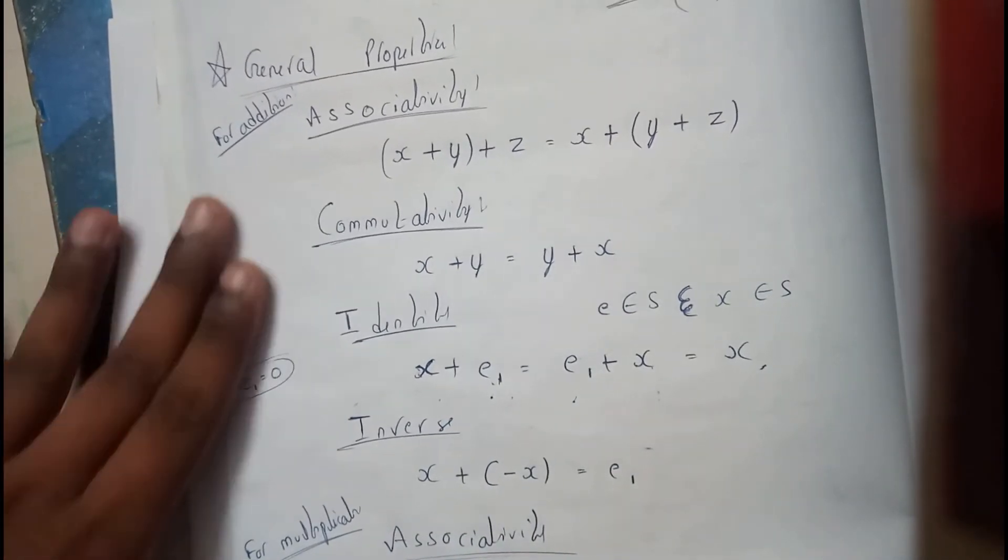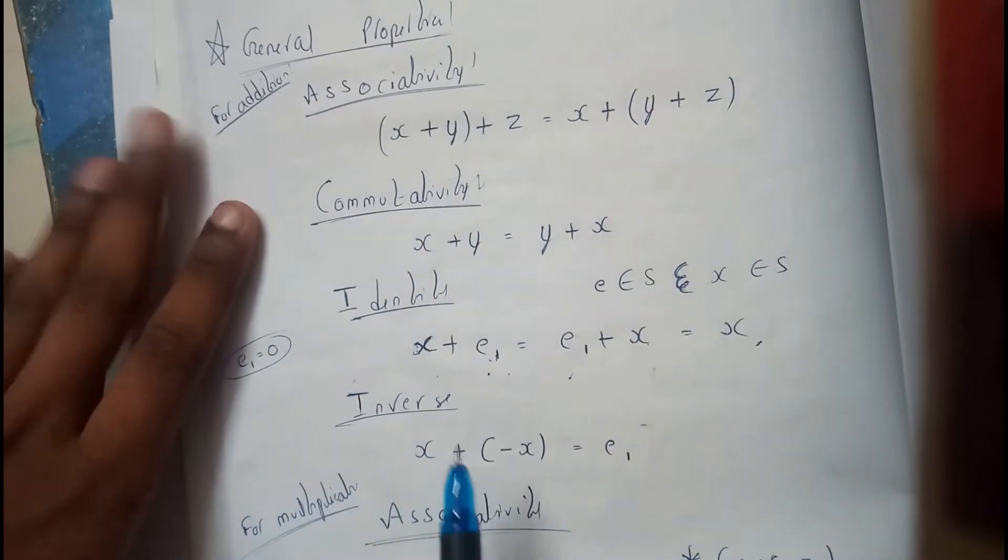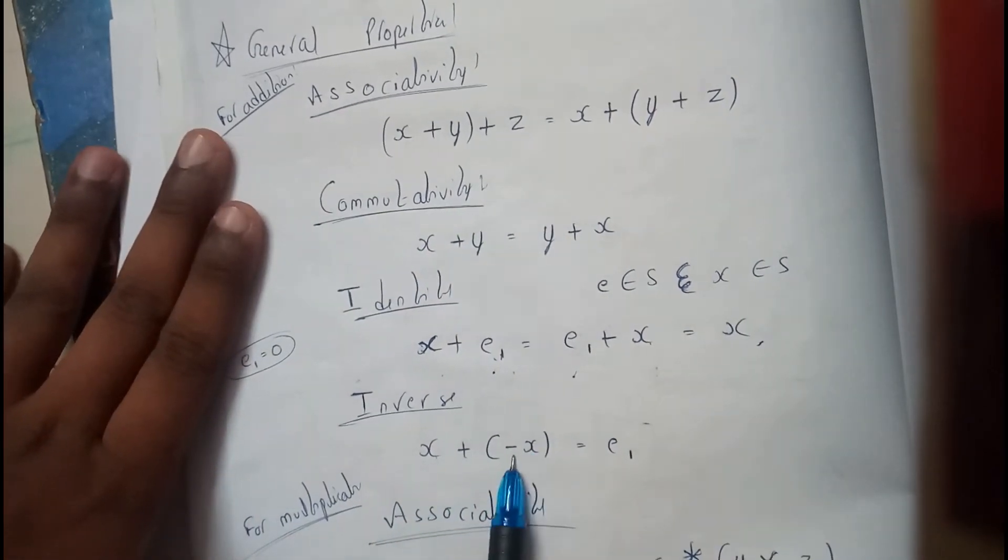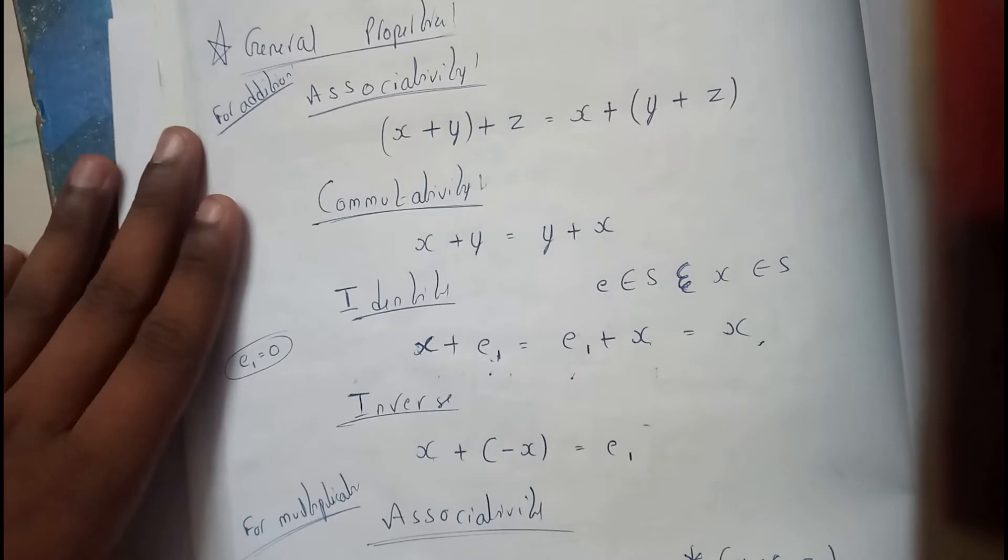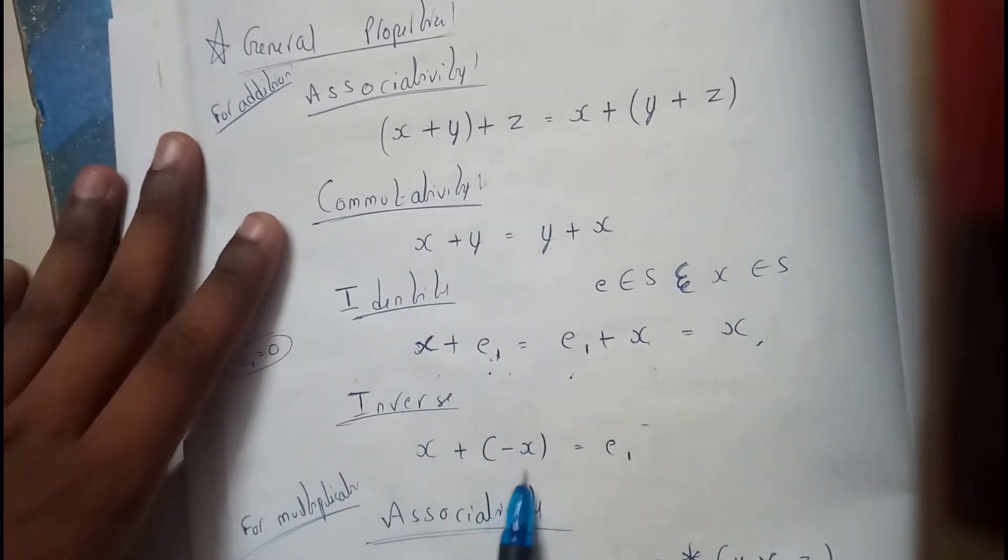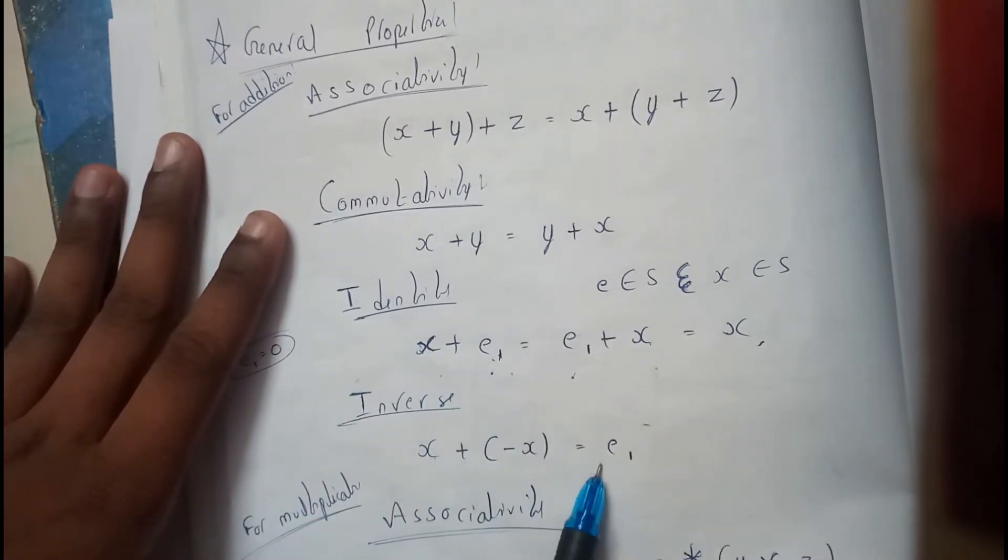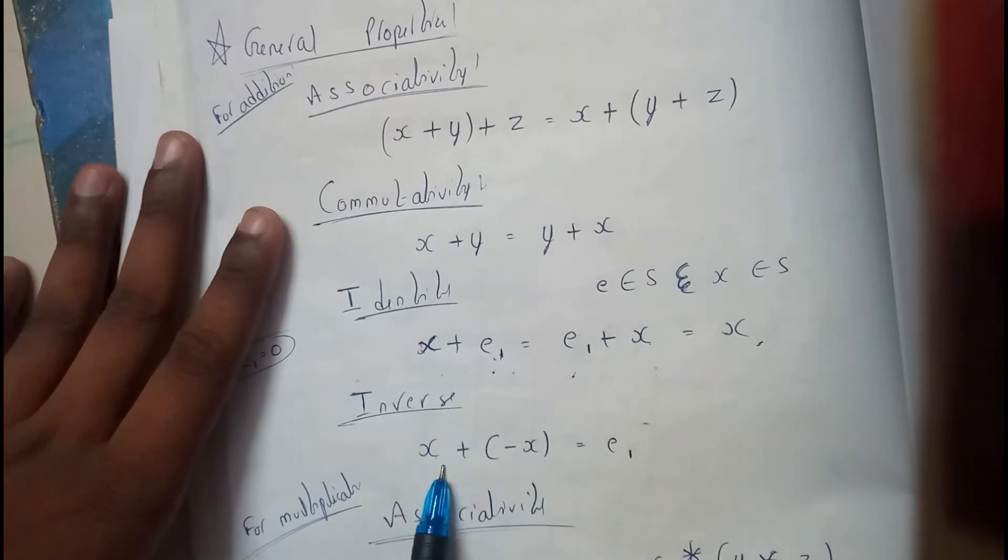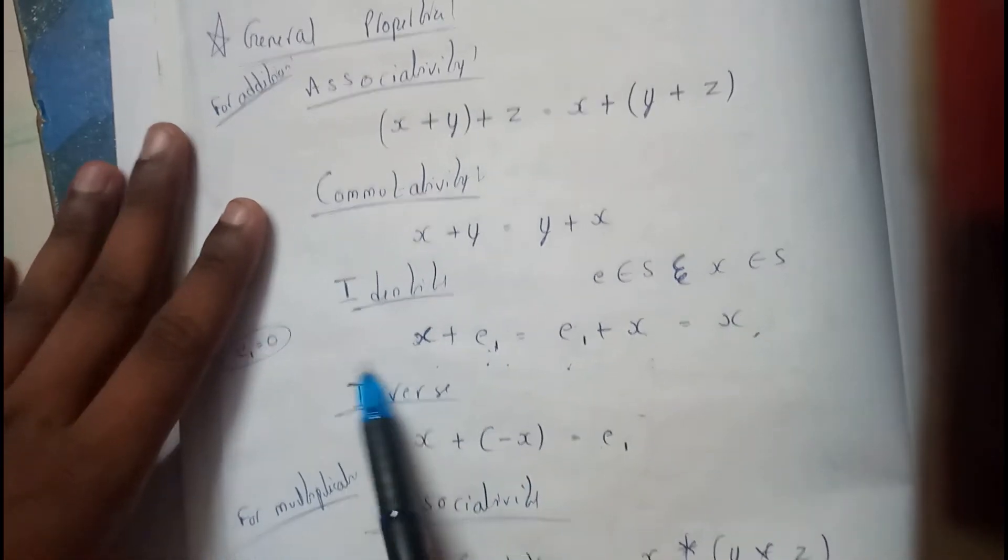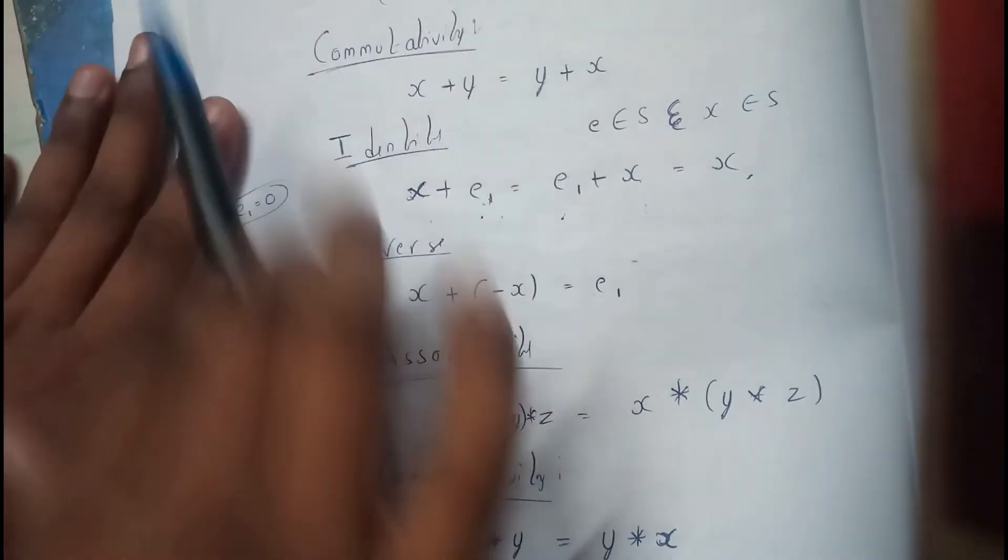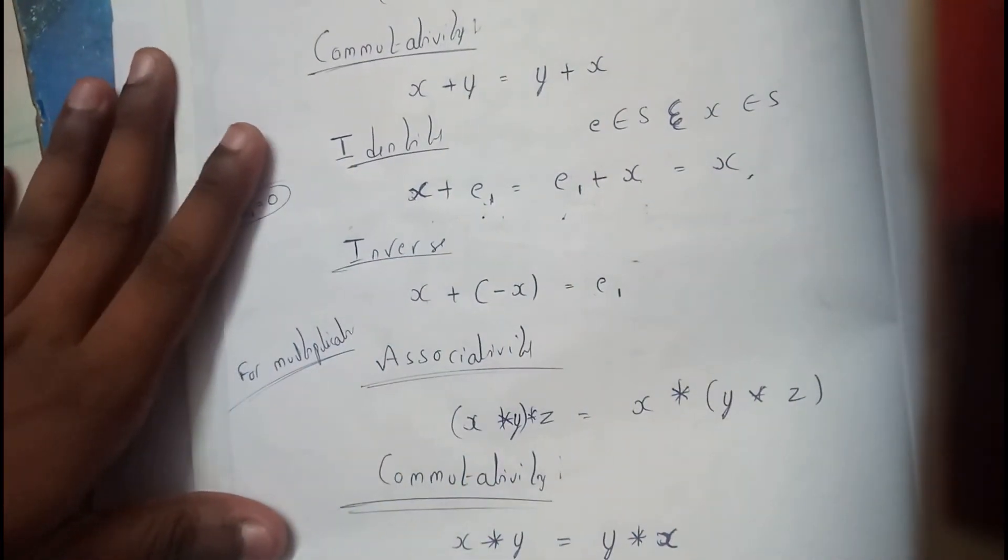Inverse: x + (-x) equals e, where e is the identity. This also equals zero. If it is three, minus three equals zero. I hope everyone understood the addition properties.